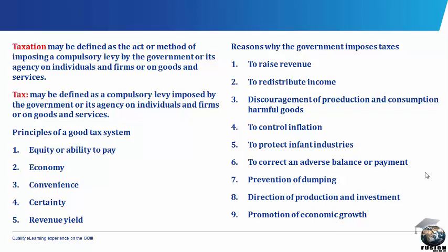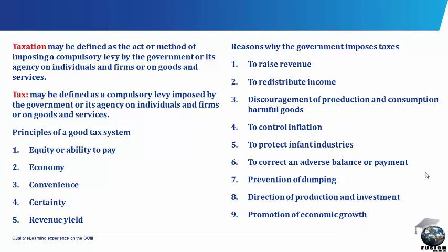Reasons why the government imposes tax. The following are the reasons why government imposes tax: 1. To raise revenue. 2. To redistribute income — this is achieved if the income tax is made to be progressive in nature. 3. For the protection of infant industries — this is done by heavily taxing foreign-made goods in order to discourage their importation. 4. As a fiscal device — tax is used to control inflation and deflation. 5. For general administrative purposes — the administrative machinery of a country may collapse if there is no money to maintain it; tax therefore forms one of the sources of such money.